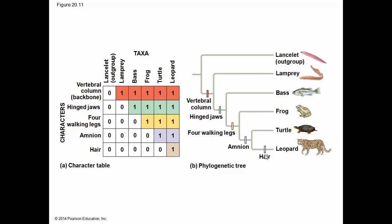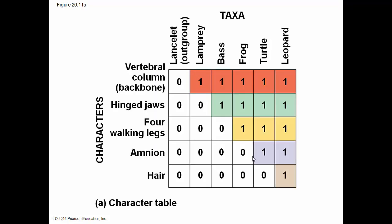Here is the final phylogenetic tree. Here are the characteristics: vertebral column, hinged jaws, four walking legs, amnion, hair. Here is the character table, more closely aligned. You can look at this in your textbook on page 388.